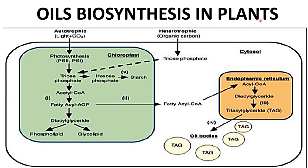For oil biosynthesis in plants, in the chloroplast, light and carbon dioxide from the atmosphere are utilized for photosynthesis via photosystem 1 and photosystem 2. Triose phosphate is first produced, which is converted into hexose phosphate, and eventually into fatty acyl-ACP. This then enters the cytoplasm and endoplasmic reticulum to produce acetyl-CoA, which is converted into diacylglyceride and then triacylglyceride.